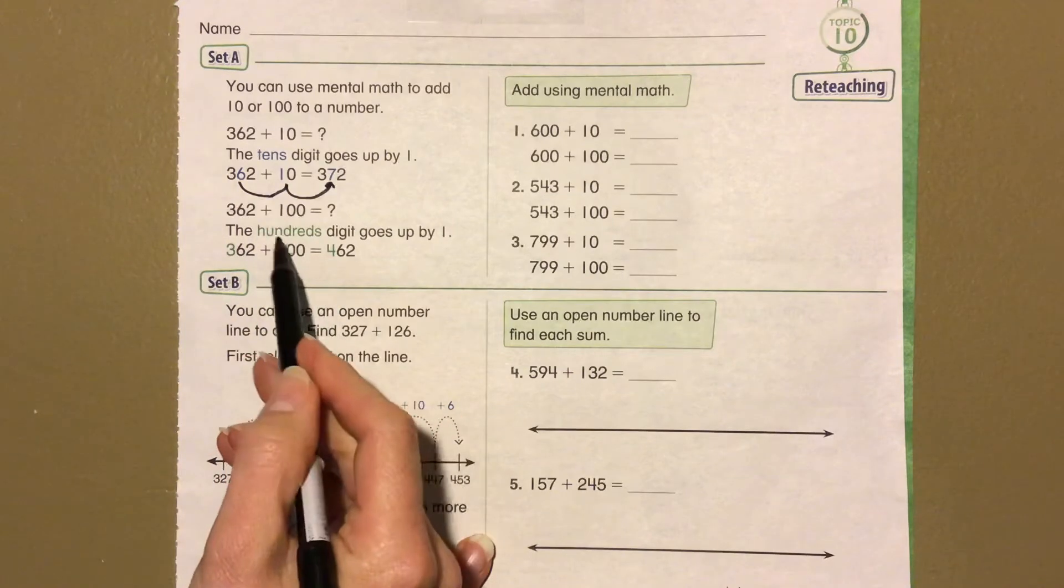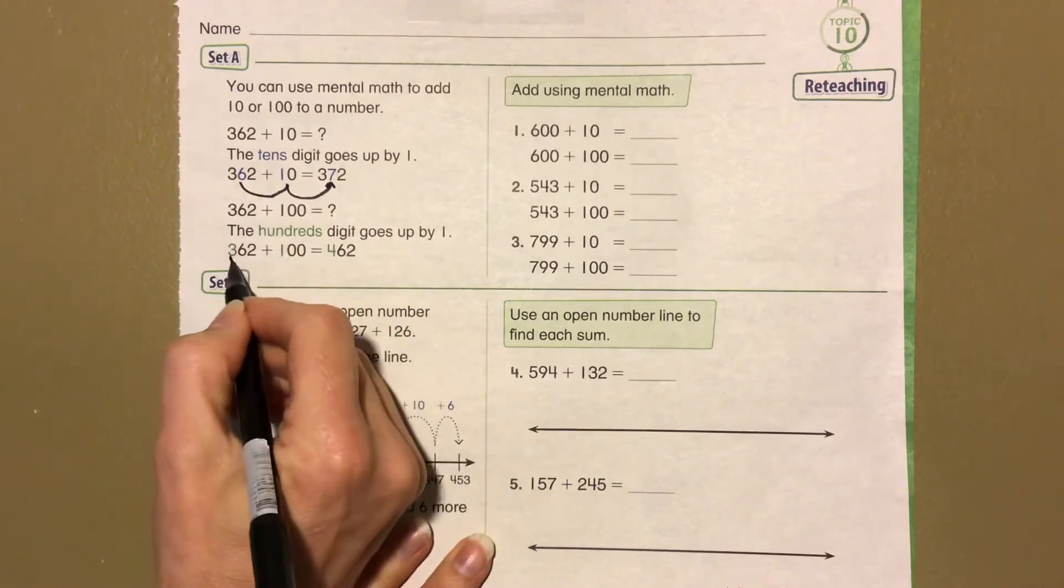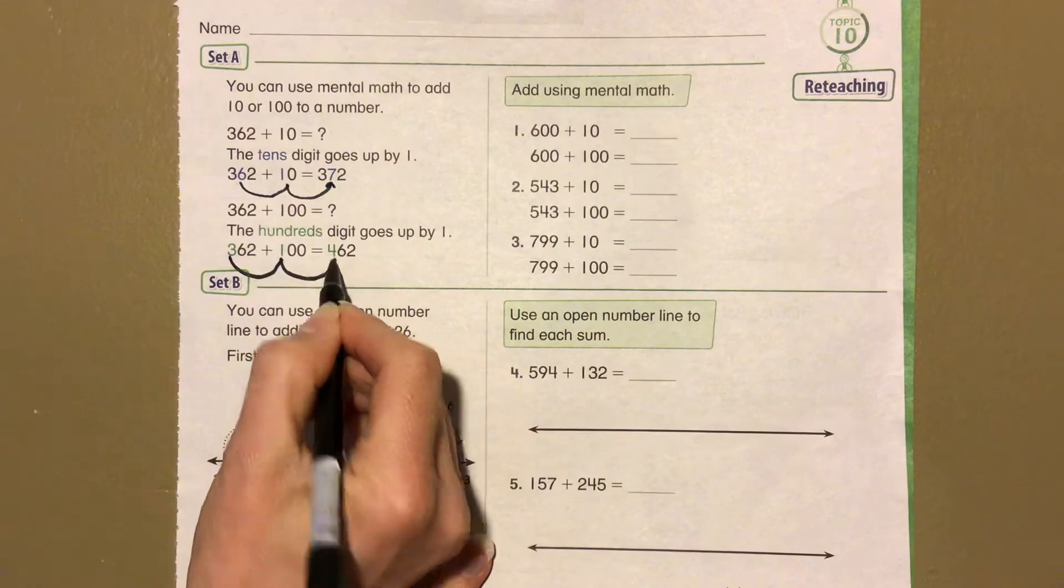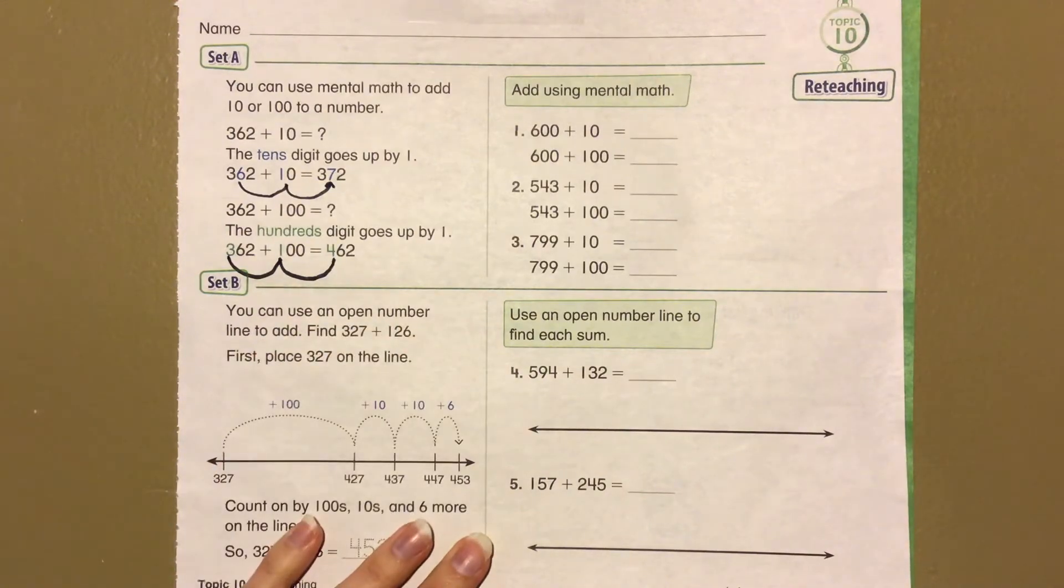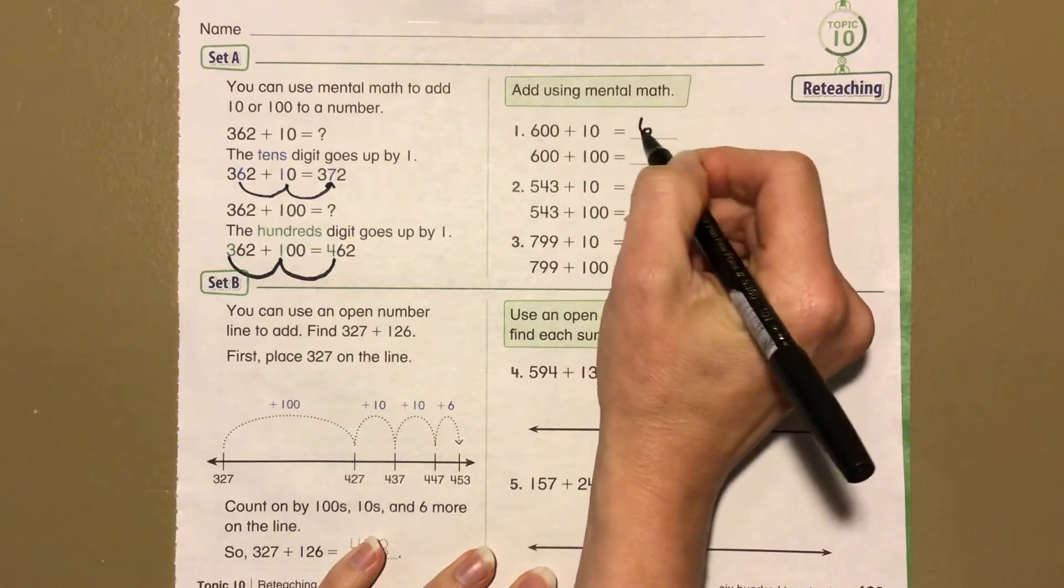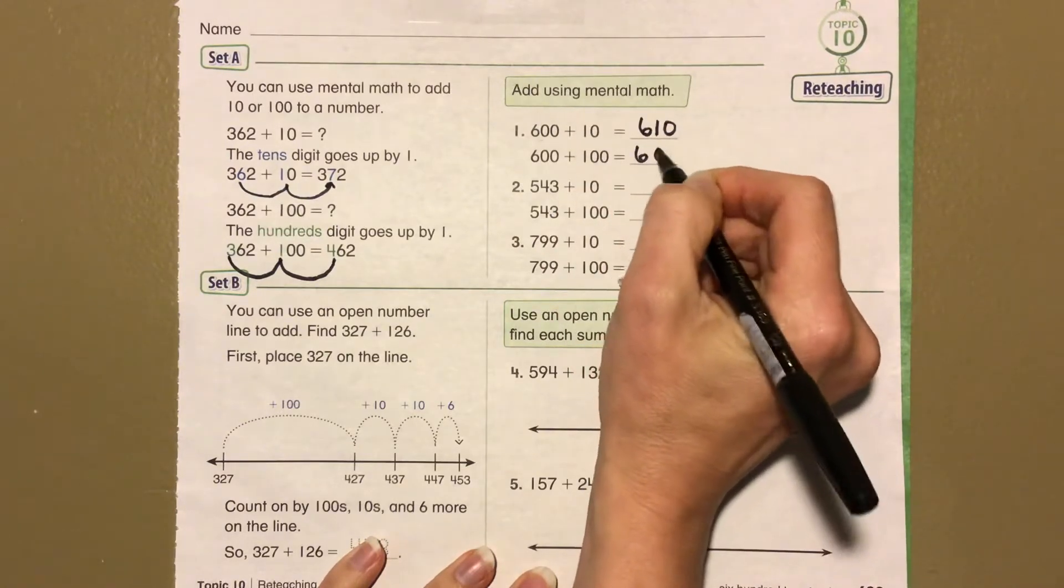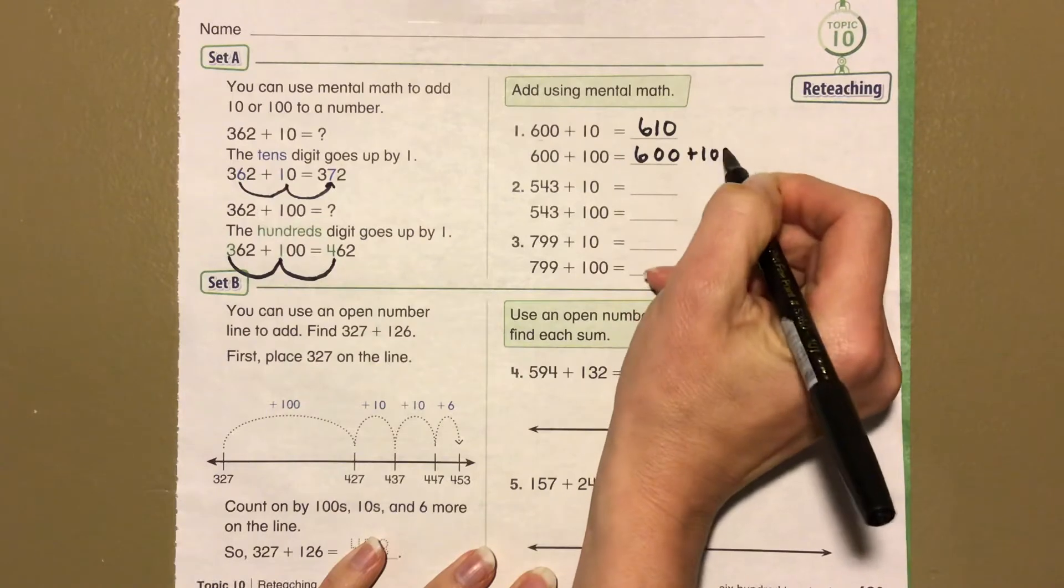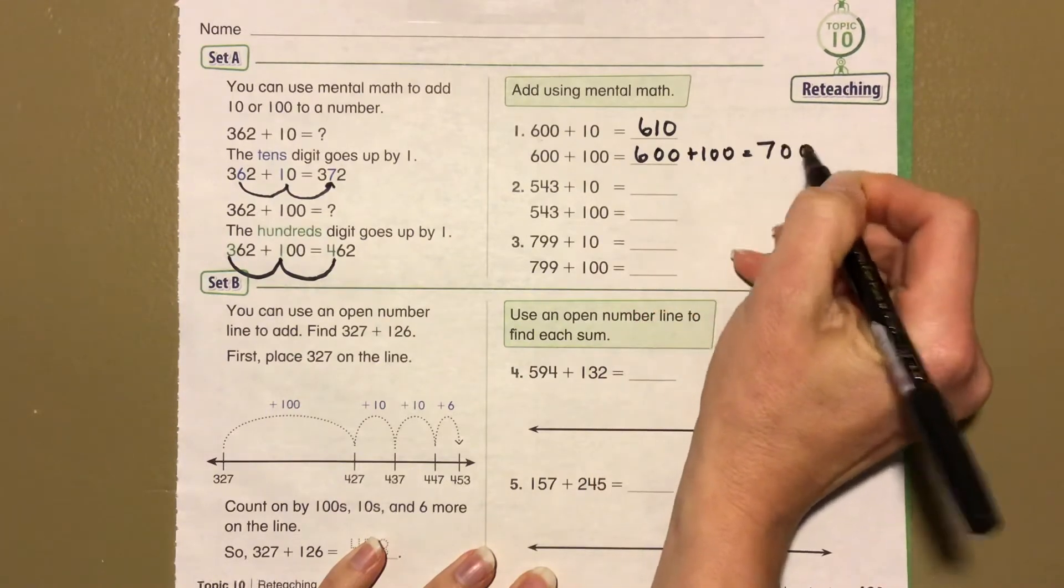362 plus 100, the hundreds digit goes up by 1, so 3 plus 1 is 4. All right, so we're going to add using mental math. 600 plus 10 is 610, 600 plus 100 equals 700.